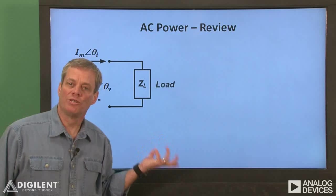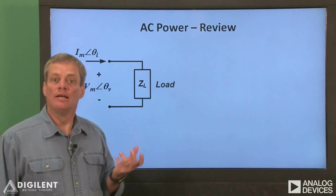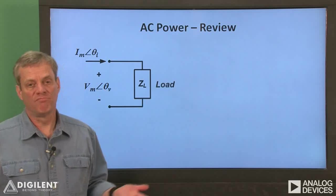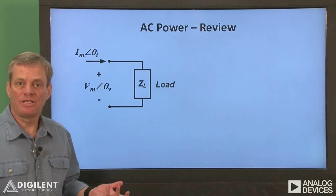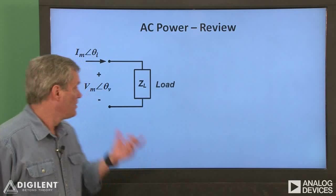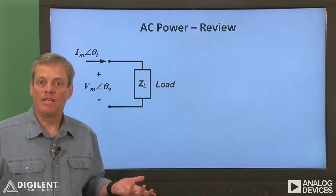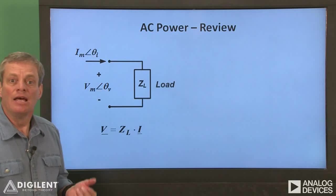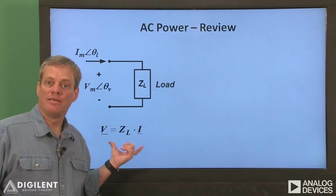This is the fundamental problem we're concerned with. We're delivering AC power to some load with an impedance Z sub L. Typically, this load's using the power we're sending it to perform some work, running a motor in a factory, for example. Since we're talking about AC power, all of the signals involved are sinusoidal, so they can be represented by phasors. The voltage in this circuit has a magnitude V sub M and a phase angle theta V. The current has a magnitude I sub M and a phase angle theta sub I. Keep in mind that the relationship between the voltage and the current is set by the impedance of the load.